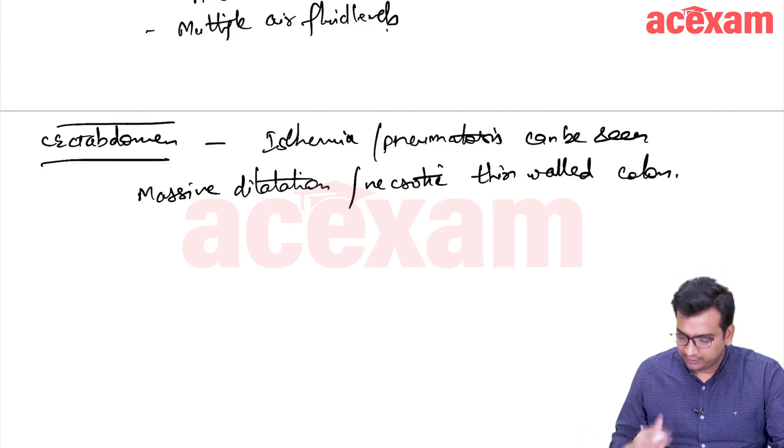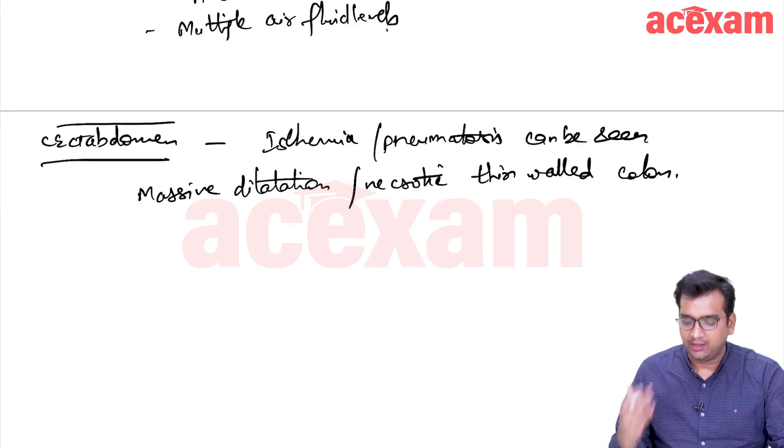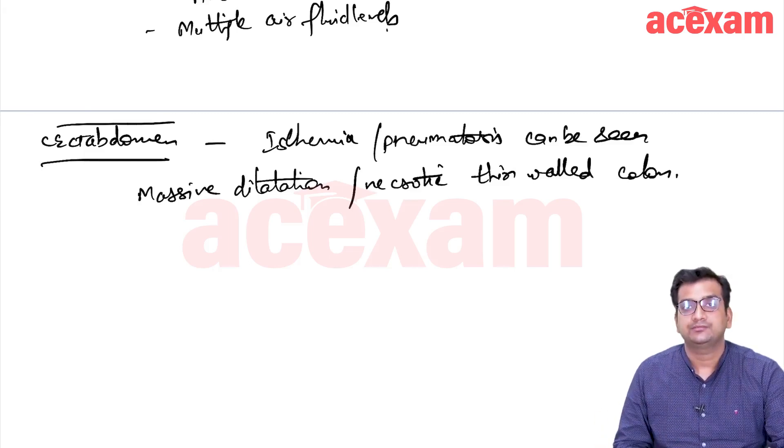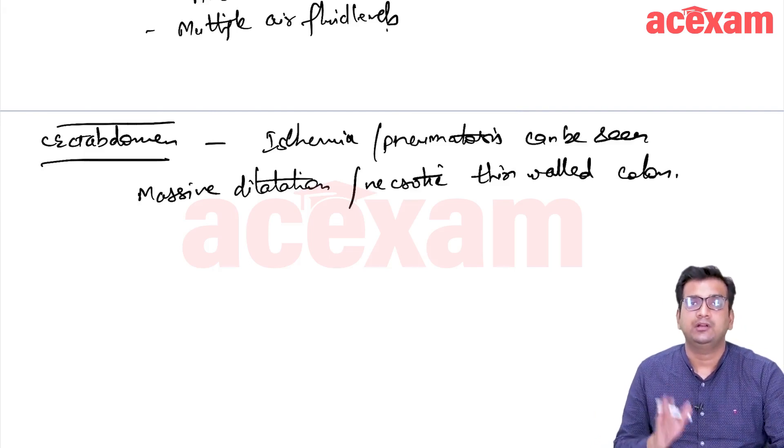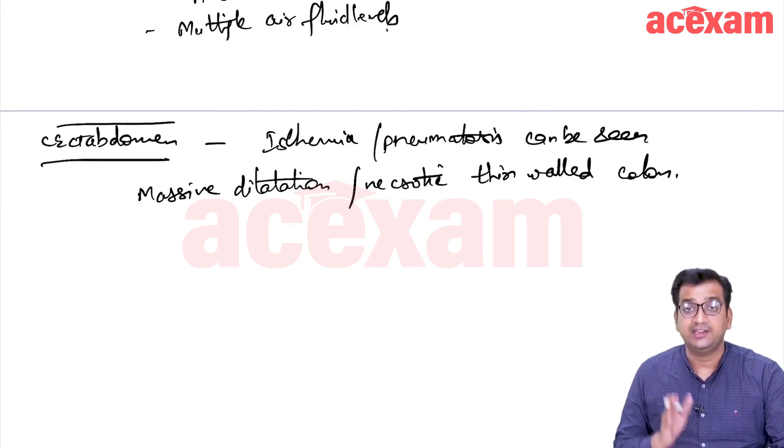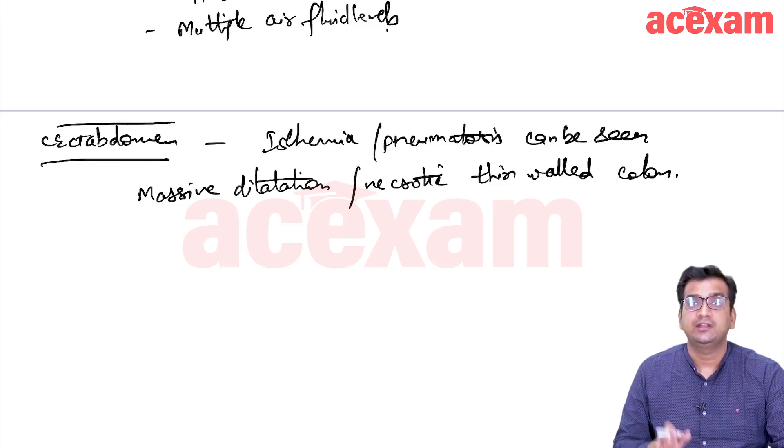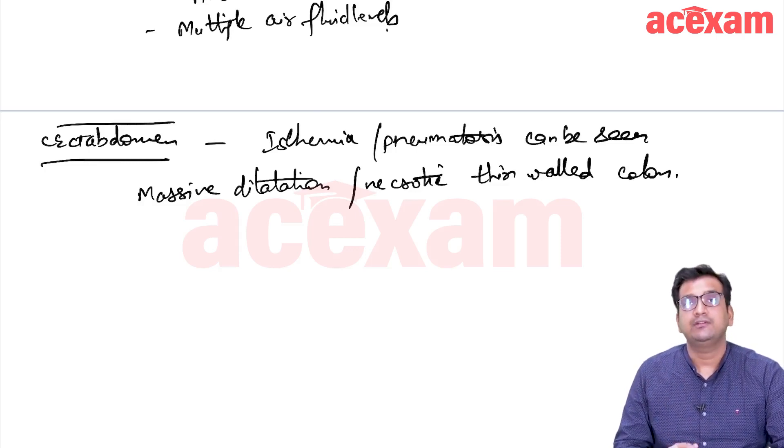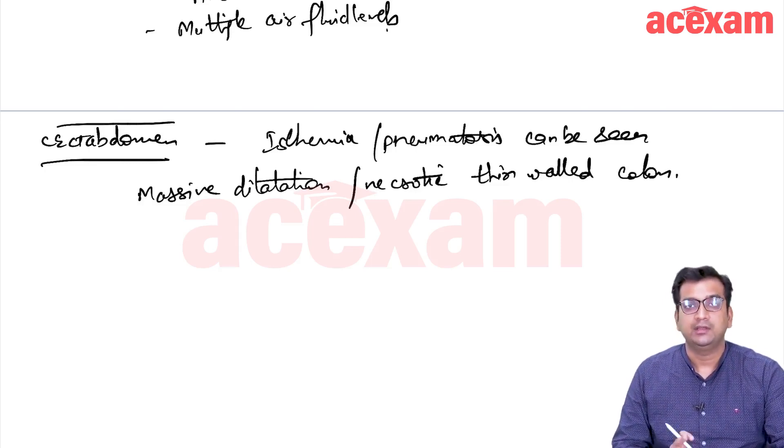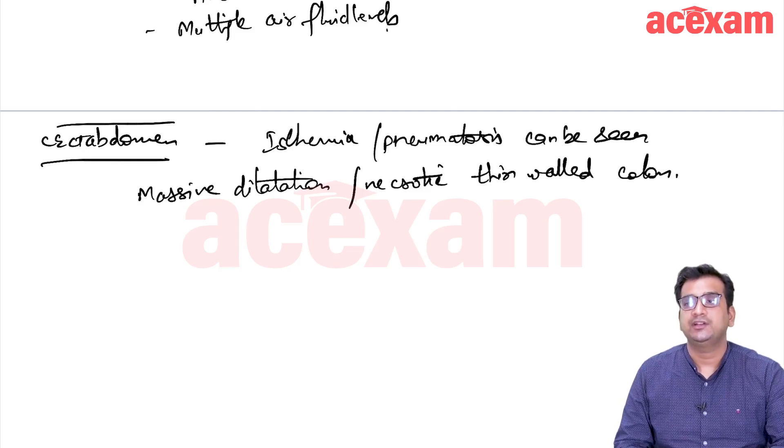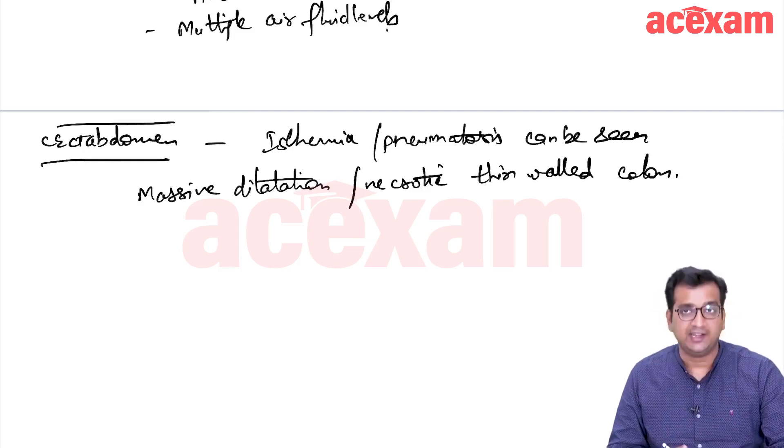Now we have diagnosed, how we are going to manage? Management, I have already told you initially we will have to manage the patient conservatively and we are going to give IV fluids and antibiotics and then we will have to take up the patient for surgery. Because the medical management is associated with increased recurrence.